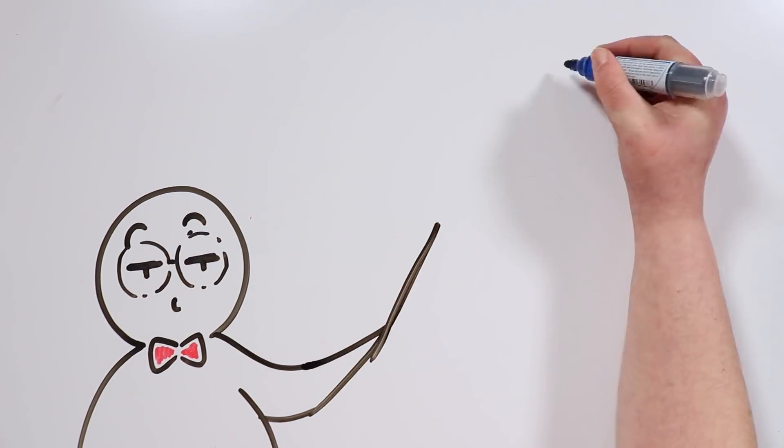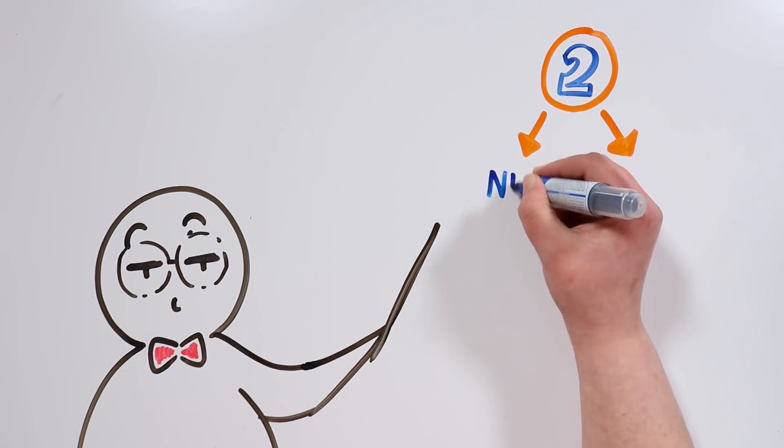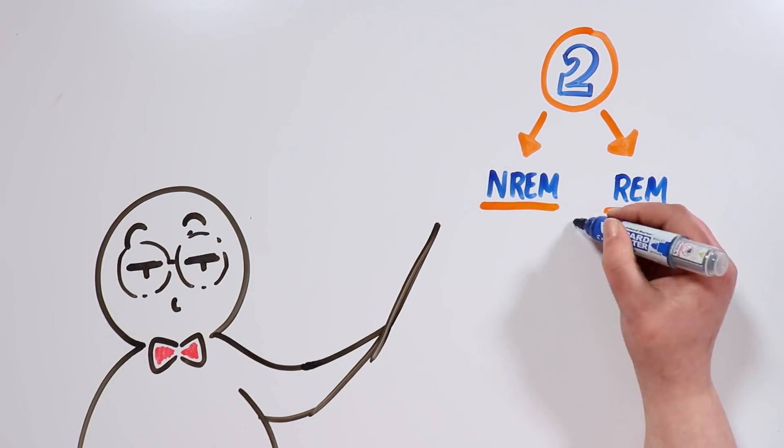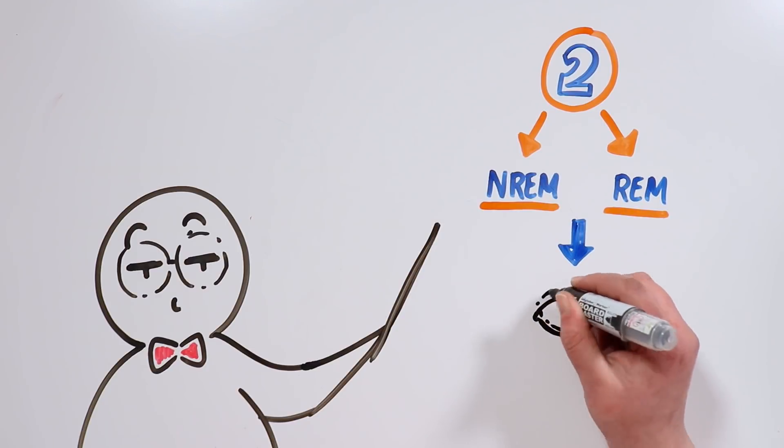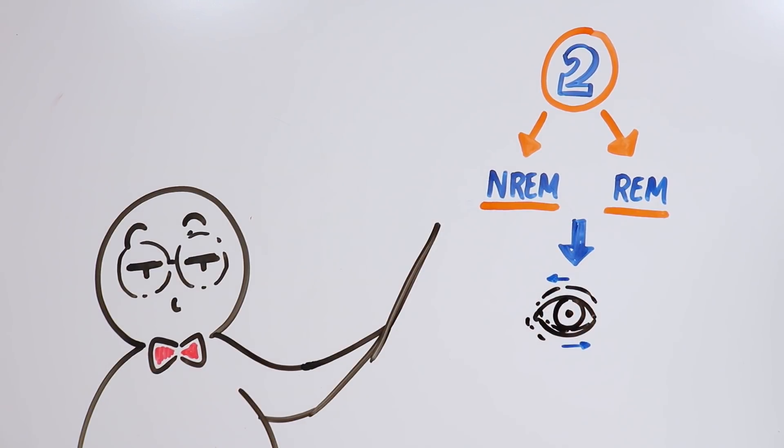First, we can classify the phases of sleep into two categories – REM and NREM. REM stands for Rapid Eye Movement, while NREM stands for Not Rapid Eye Movement.